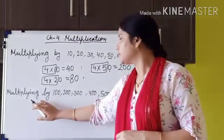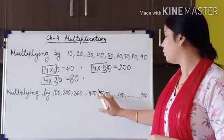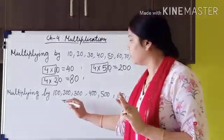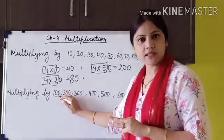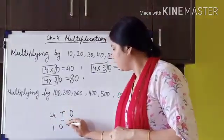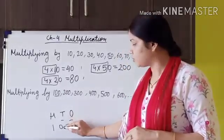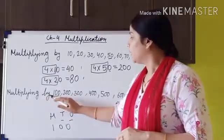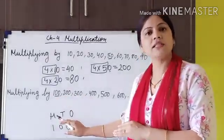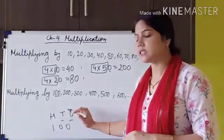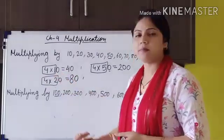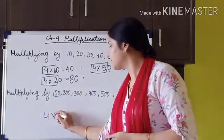The second topic is multiplying by 100, 200, 300, 400 up to 900 — 3-digit numbers where 0 is placed at both the 1's position and 10's position. For example, in 100, both the 1's and 10's places are 0. Suppose we multiply 4 by 100.